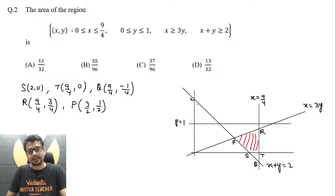So x plus y is supposed to be greater than or equal to two, so this region it will be. And x equals three y, basically slope being one by three.